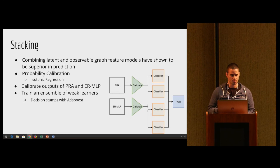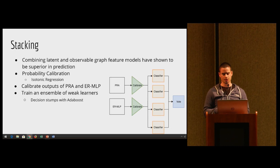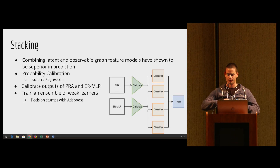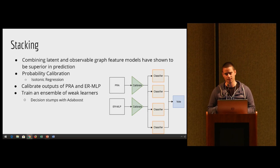To do that, we had to calibrate these models - the scores of these models. There's two popular approaches: isotonic regression and Platt scaling. But we found that isotonic regression is showing a bit better results, so we went with that to calibrate our models. Then we take these calibrated scores and feed them into another set or an ensemble of classifiers as features.